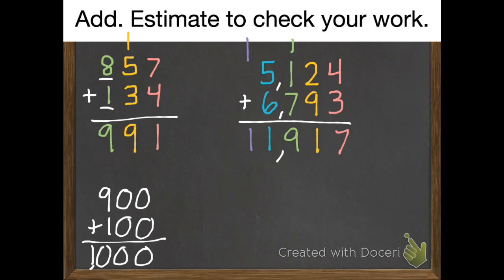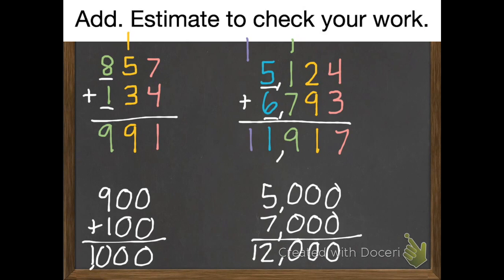Estimate to check our work. Five thousand one hundred twenty-four equals five thousand. Six thousand seven hundred ninety-three equals seven thousand. We add those together to get twelve thousand, which is very close to eleven thousand nine hundred seventeen. So we know that each of our answers are reasonable.